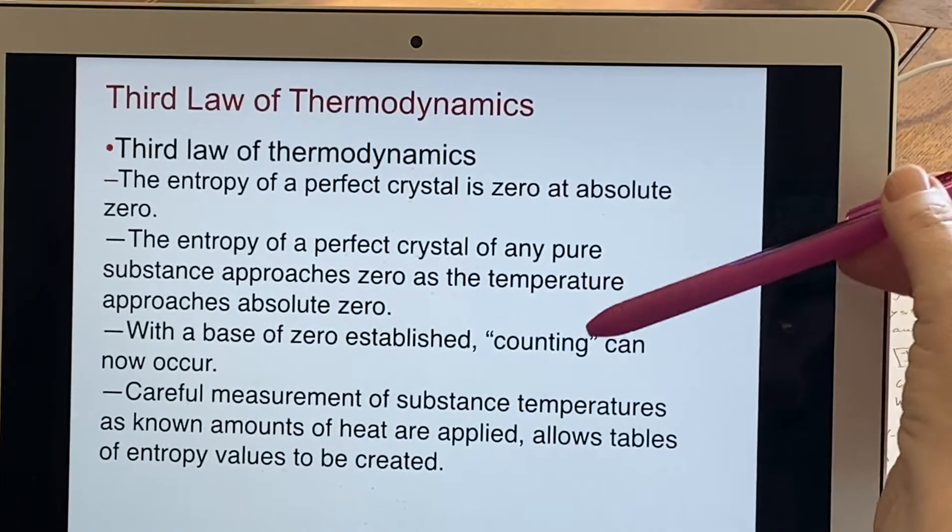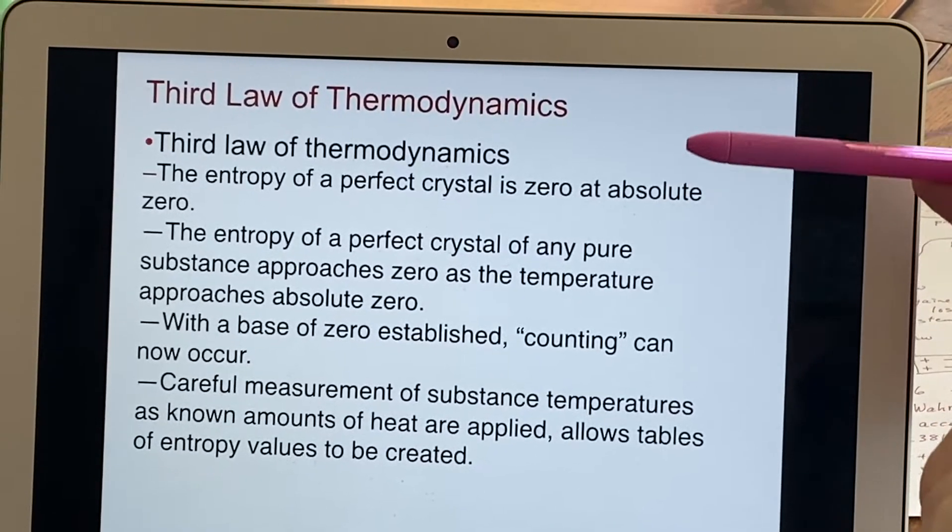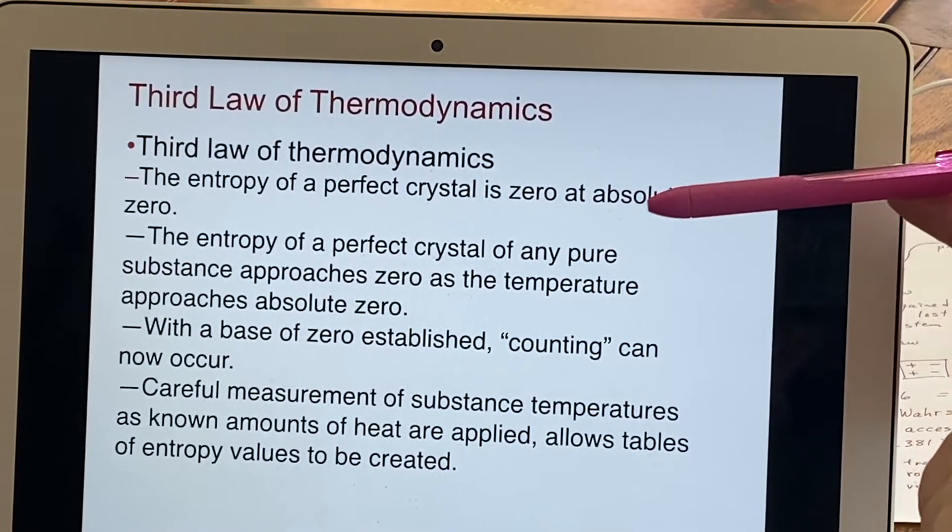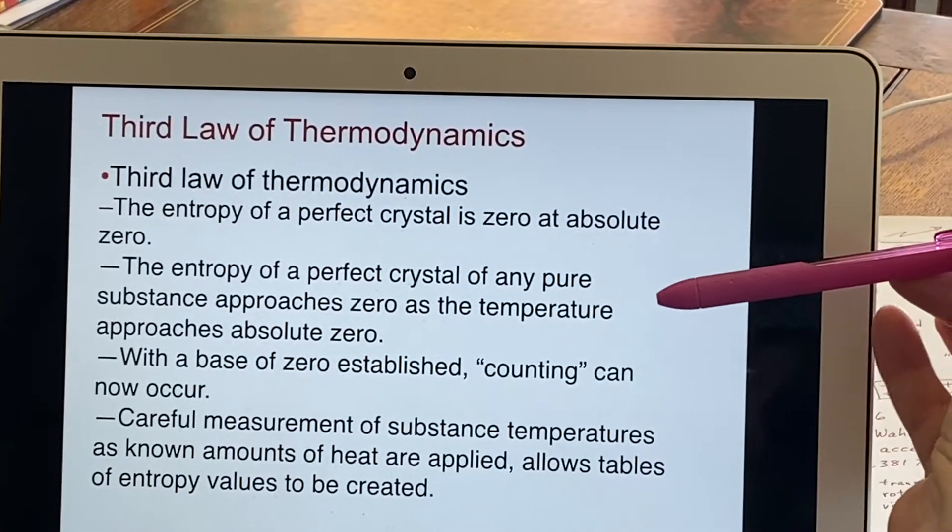And after that, then you can start counting. You are only counting upwards. Since you are only counting upwards and entropy can only increase, this results in engineers saying that the third law of thermodynamics is you can't get out of the game.